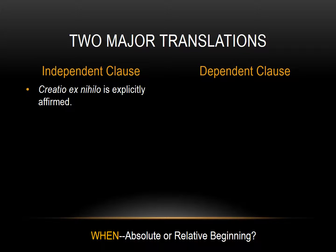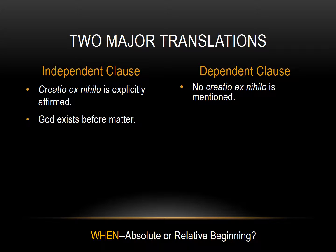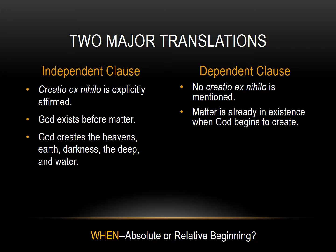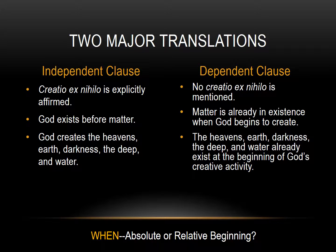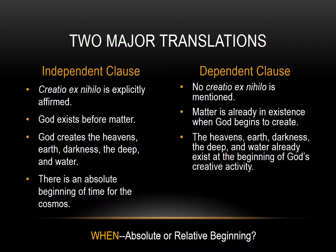The independent clause explicitly affirms the concept of creation out of nothing; the dependent clause does not. With the independent clause, God exists before matter. With the dependent clause, matter is already in existence when God begins to create. In the standard translation, God creates the heavens, earth, darkness, the deep, and water. In the more recent translation, these things already exist at the beginning of God's creative activity. With the independent clause there is an absolute beginning of time for the cosmos; with the dependent clause, there is not.